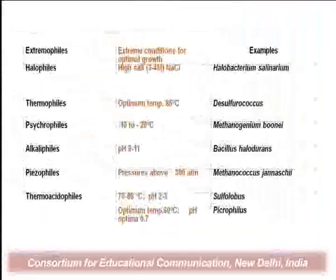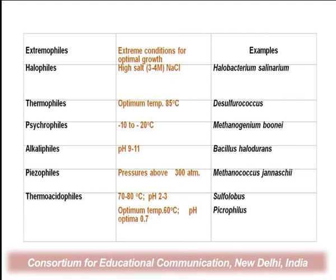There are many forms of archaea present on Earth and they are extremophiles — they survive adverse environmental conditions. For example, halophiles survive at high salt conditions; alkaliphiles survive at high pH (pH 9 to 11); piezophiles survive at high pressure (300 atmospheres); and acidothermophile archaea survive at high temperature with acidic conditions.